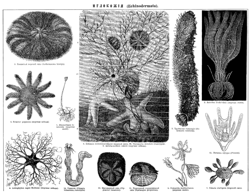Echinoderms evolved from animals with bilateral symmetry. Although adult echinoderms possess pentaradial, or five-sided, symmetry, echinoderm larvae are ciliated, free-swimming organisms that organize in bilateral symmetry, which makes them look like embryonic chordates. Later, the left side of the body grows at the expense of the right side, which is eventually absorbed. The left side then grows in a pentaradially symmetric fashion, in which the body is arranged in five parts around a central axis.